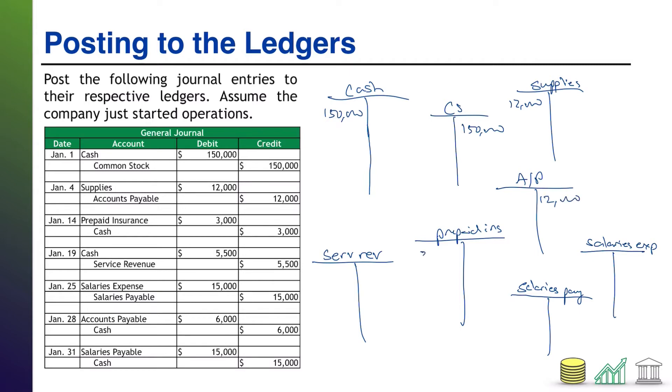For the next one, I have a debit to prepaid insurance of 3,000. My offsetting credit is cash. For the next one, I have a debit to cash for 5,500. My offsetting credit is service revenue. For the next one, I have a debit to salaries expense of 15,000 with a credit accompanying it to salaries payable. For the next one, I have got a debit to my accounts payable for 6,000 with an offsetting credit to cash. And for my last one, I have a 15,000 debit to salaries payable with an offsetting credit to cash. So at this point, I have officially posted the journal entries to their respective ledgers.